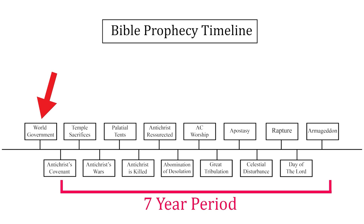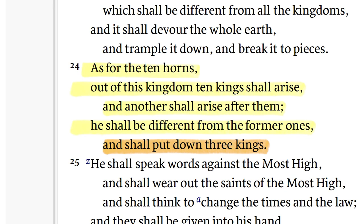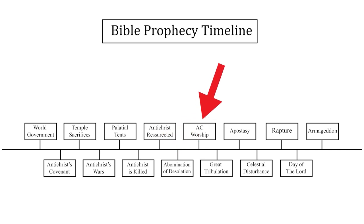I will argue that we are not told how long this seventh head will have been in existence before the Antichrist is on the scene — it could be one year or a hundred years or more. I will further argue that the Antichrist will not be associated with the final empire's creation. In fact, he seems to be in opposition to it when he comes on the scene. He eventually takes this world system over and makes it about him and his worship after the abomination of desolation at the midpoint.